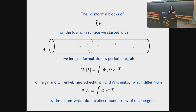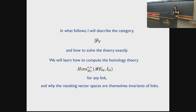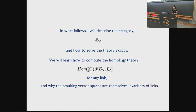The actual conformal blocks differ from our equivariant central charge by some insertions that don't affect monodromies and the statements about Euler characteristic of the intersection of Lagrangians. So in what follows, I'll describe the category of A-branes and how to solve the theory exactly. We'll learn how to compute this homology theory for any link, and how to prove that the resulting vector spaces are invariants of links.